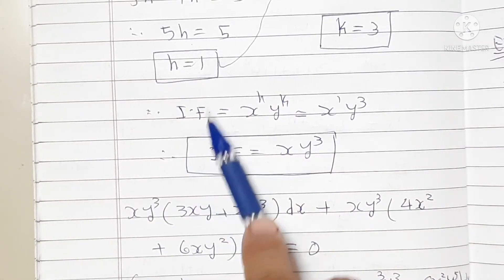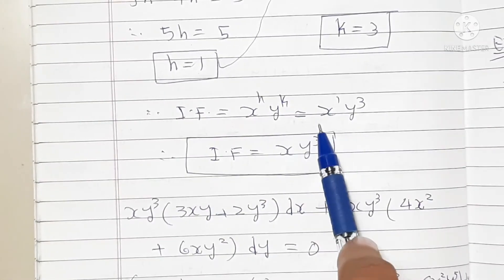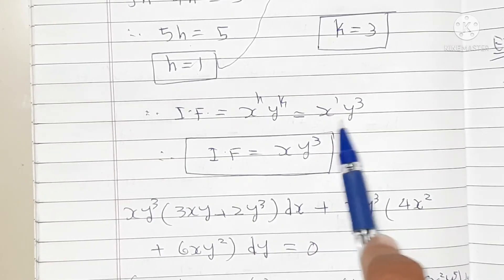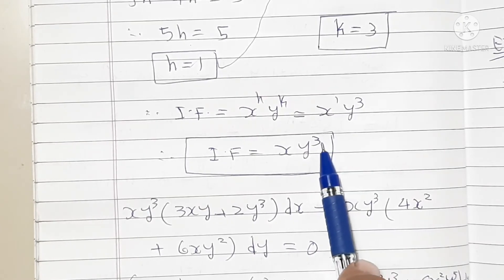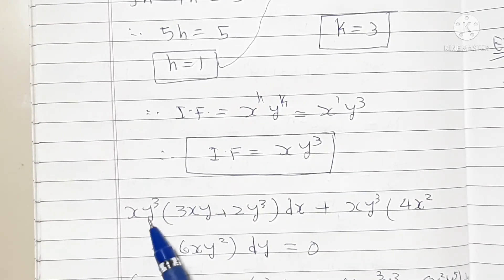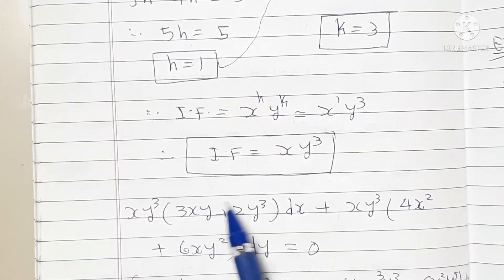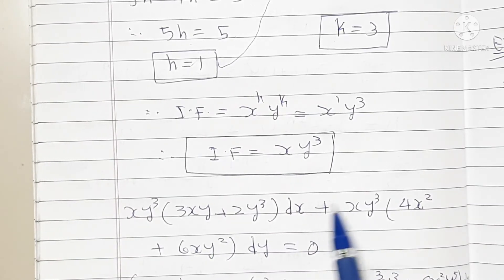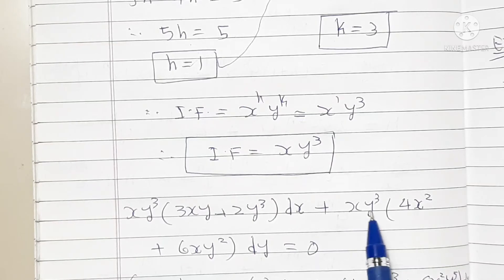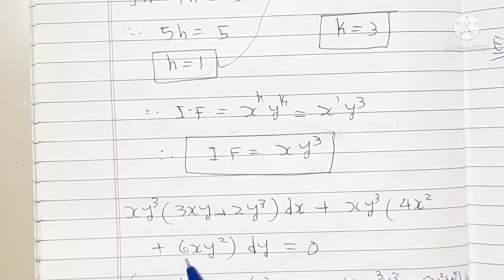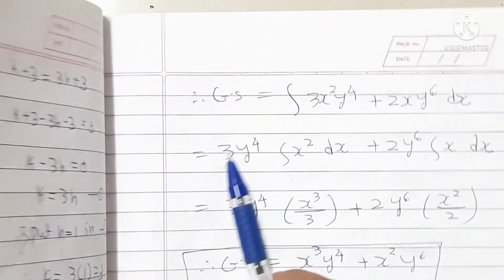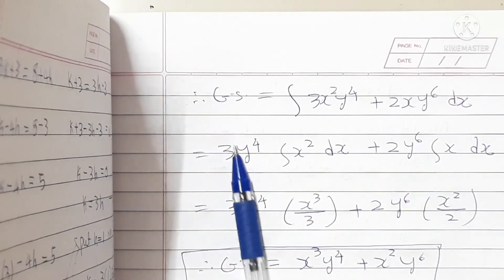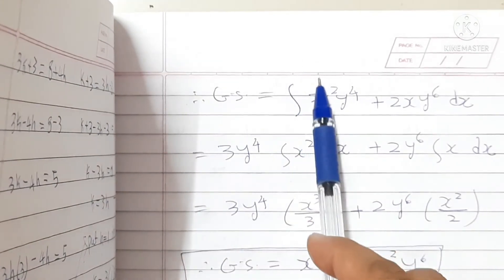The integrating factor is x^h · y^k = x¹ · y³ = xy³. Multiplying this integrating factor into the original equation gives: xy³(3xy + 2y³) dx + xy³(4x² + 6xy²) dy = 0.